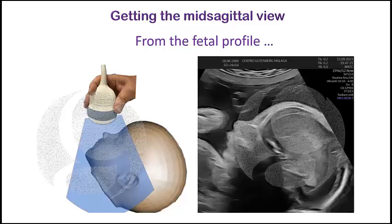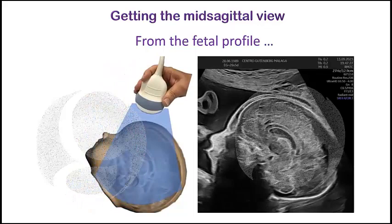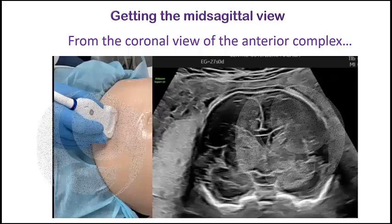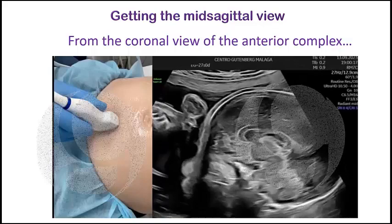All of you know how to get a nice image of the fetal profile. When you are looking at the profile, you only need to move slightly the probe following the frontal contour until you insonate through the anterior fontanel. If you are in the coronal view, you only need to twist the probe 90 degrees while you keep looking at the corpus callosum to immediately get the sagittal view of it.